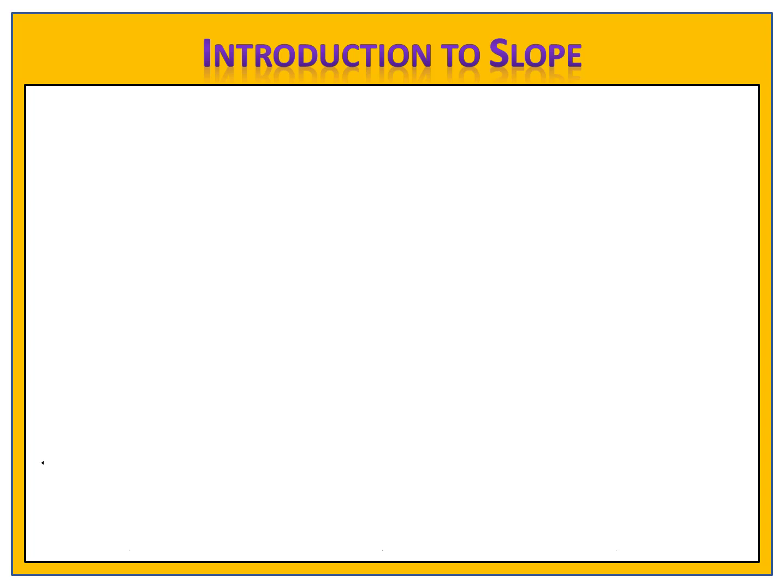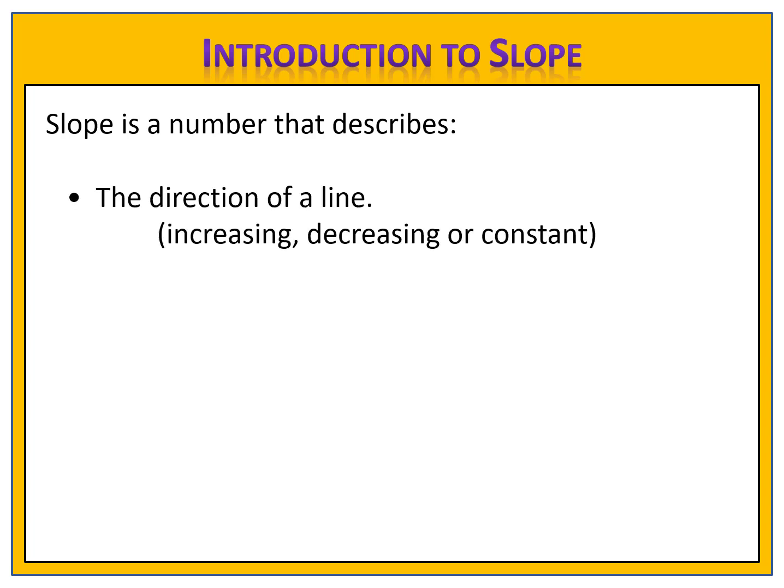Let's begin by identifying what slope is. Simply put, slope is a number that describes two things. First, slope describes the direction of a line — whether that function is increasing, decreasing, or constant. The second thing that slope tells us is the steepness of the graph of the function, or the steepness of the line.